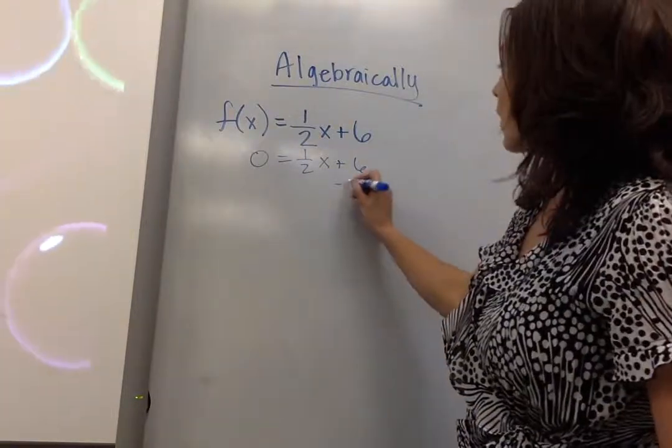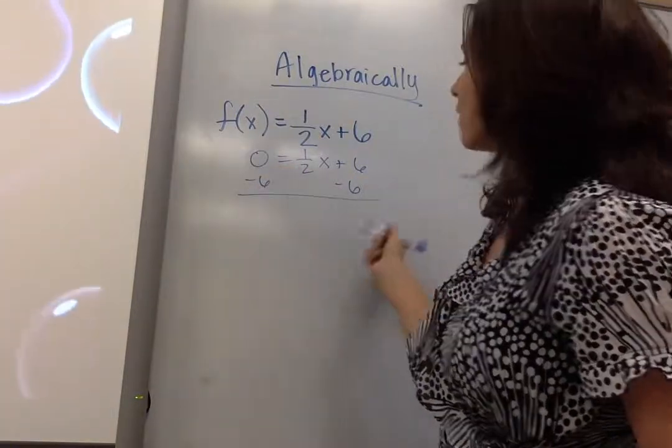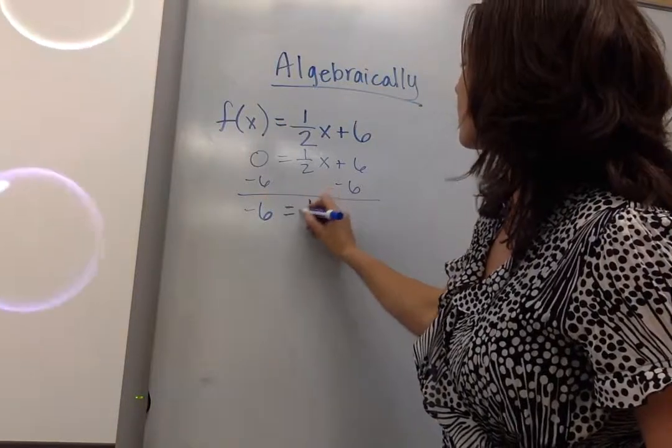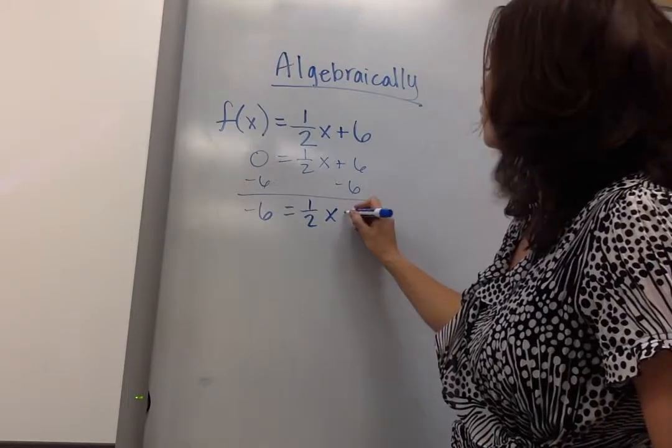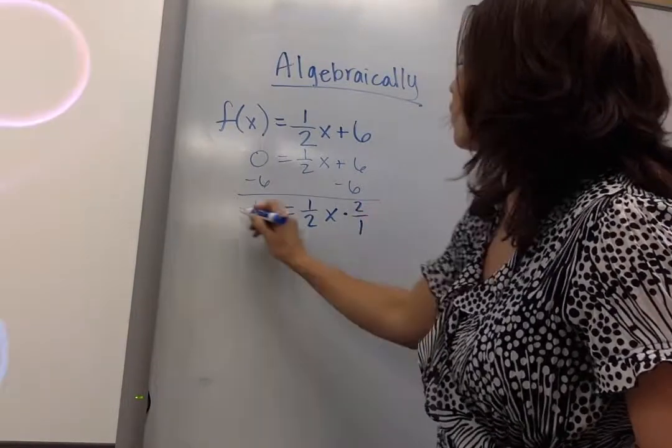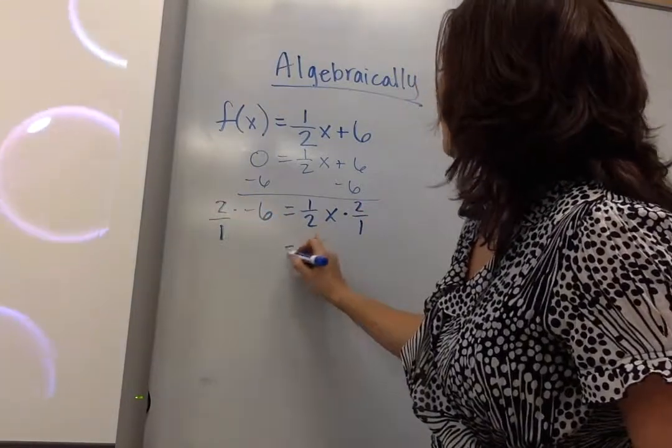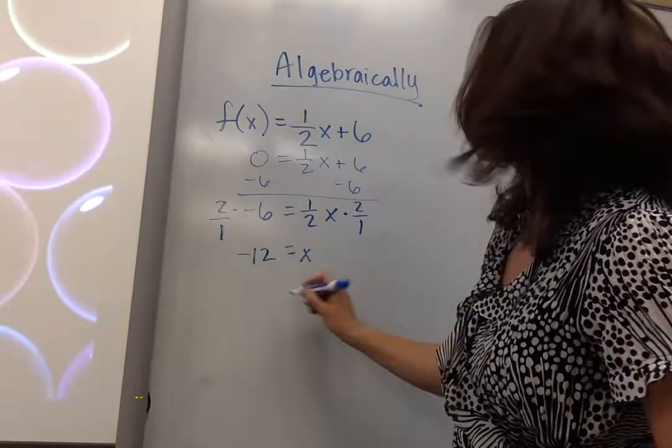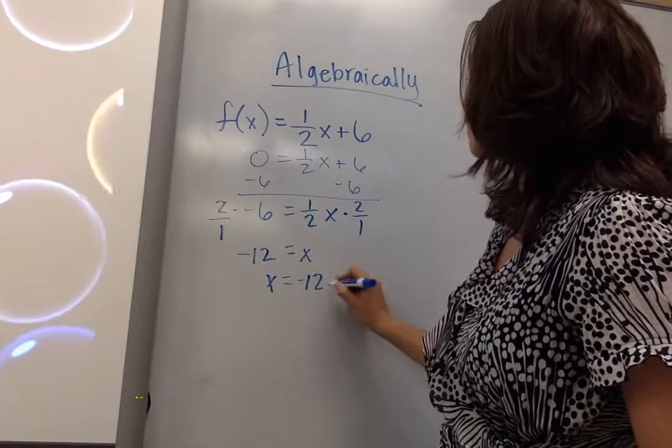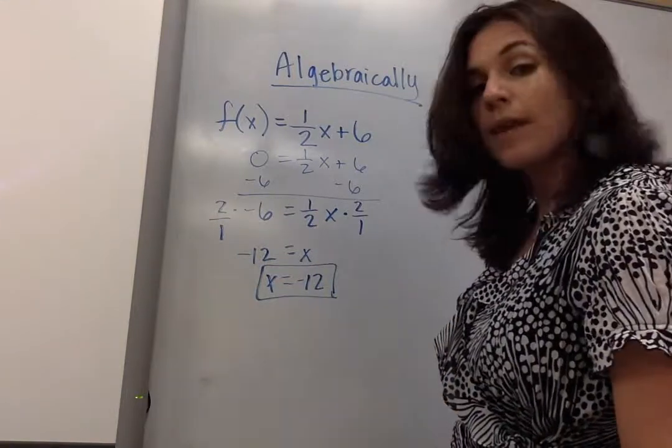So I subtract 6 on both sides, additive inverse. I get negative 6 equals 1 half x. To get x by itself, I use the multiplicative inverse, so I'm going to multiply both sides by 2 over 1, and I get negative 12 equals x. I apply the symmetric property to get x equals negative 12, and that's my answer.